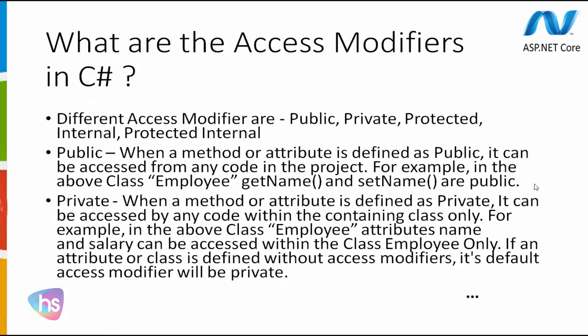What are the access modifiers in C-Sharp? The different access modifiers are: public, private, protected, internal, and protected internal. When a method or attribute is defined as public, it can be accessed from any code in the project. For example, in the Employee class, GetName and SetName methods are public.